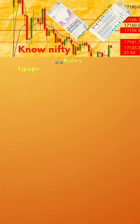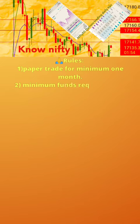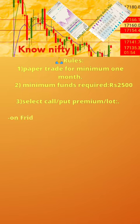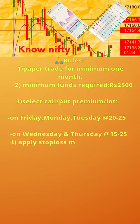Please follow the 7 rules below. 1. Paper trade for a minimum of 1 month. 2. Minimum funds required: ₹2500. 3. Select call or put premium per lot — on Friday, Monday, and Tuesday at the rate of 20–25; on Wednesday and Thursday at the rate of 15–25.